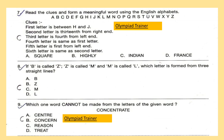Question 8: If B is called Z, that is called M, and M is called L, which letter is formed from three straight lines? Question 9: Which one word cannot be formed from the letters of the given word: CONCENTRATE?